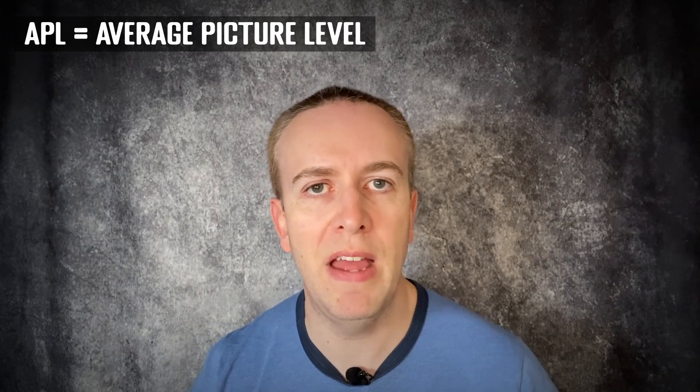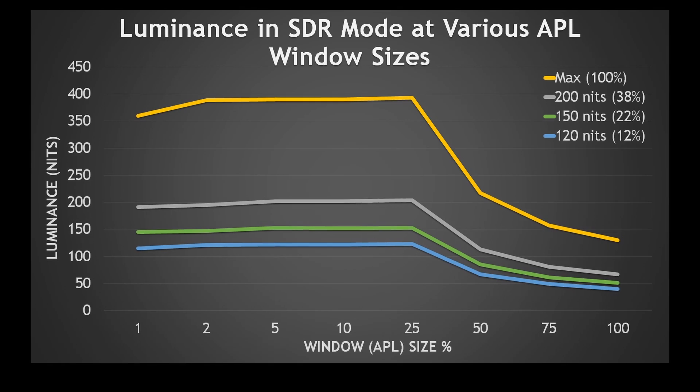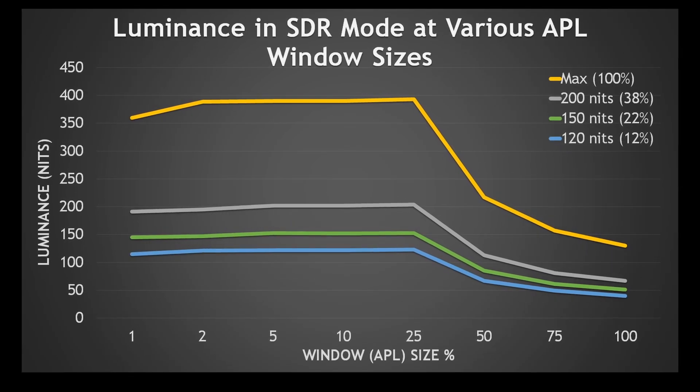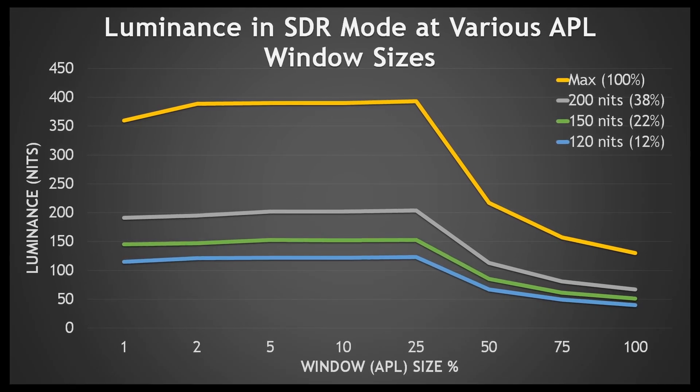In our testing and measurements, we talk about APL or average picture level. A typical way to measure it is to have different sized white windows against a dark background — for instance, a 10% white window, a 25% window, or a 100% full screen white window. That's typically how you measure brightness on OLED panels for different content types. As the APL increases — as the bright area of the screen increases — the ABL, the Automatic Brightness Limiter, will kick in and control the brightness, making screens dimmer as the APL increases.